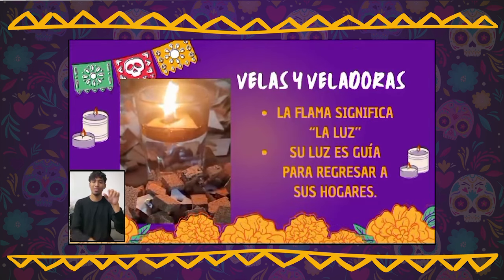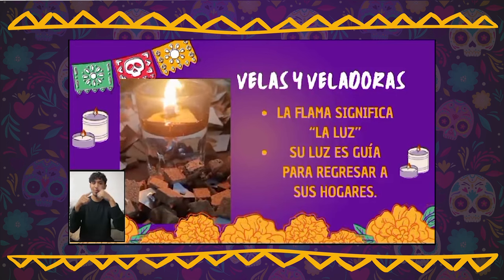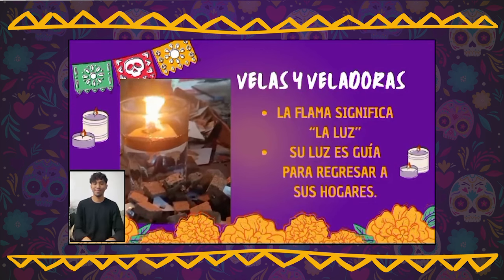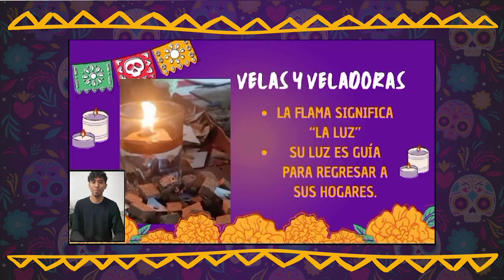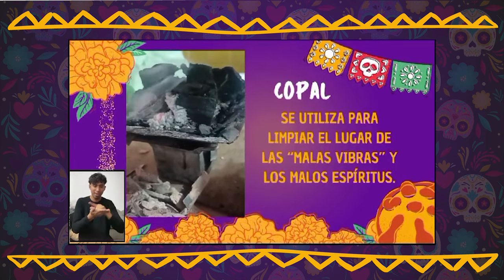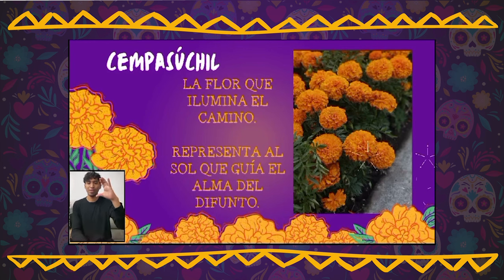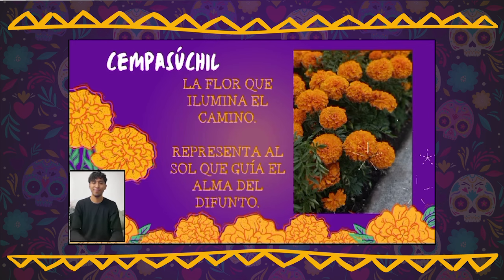Velas y veladoras. Los antiguos usaban rajas de ocote. Ahora se usa cirio en sus diferentes formas. La flama que produce significa la luz, la fe, la esperanza. Es guía con su flama para que las ánimas puedan llegar a sus antiguos hogares y alumbrar el regreso a su morada. Copal. El copal se utiliza para limpiar el lugar de las malas vibras y los malos espíritus. Flor de Cempasúchil, o flor que ilumina el camino. Esta representa al sol, el cual es quien guía el alma del difunto.